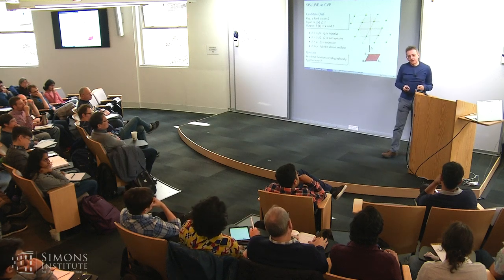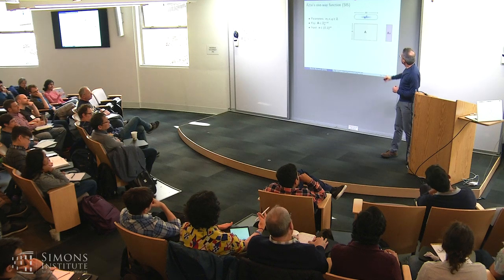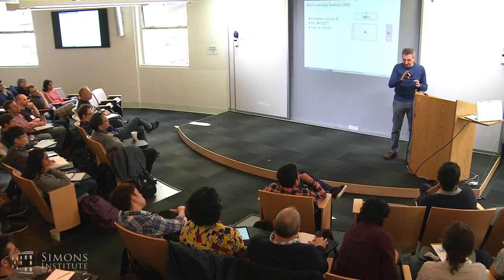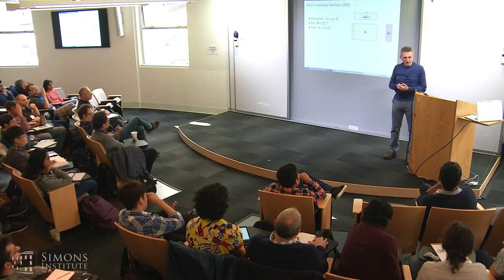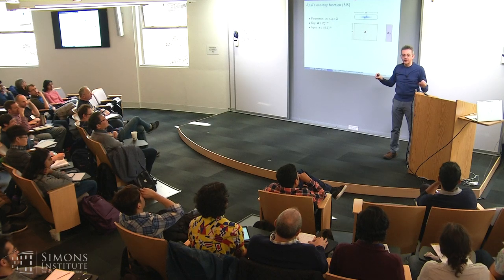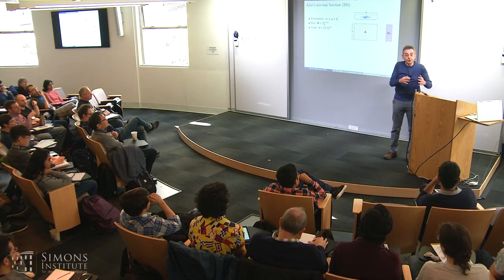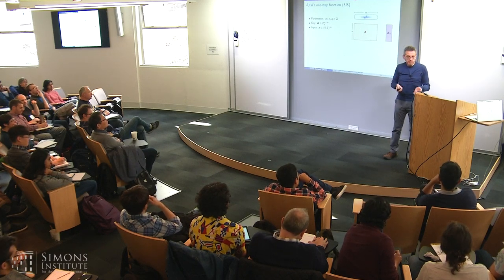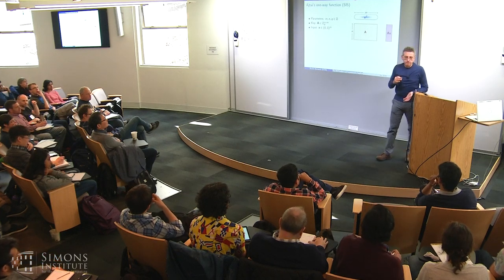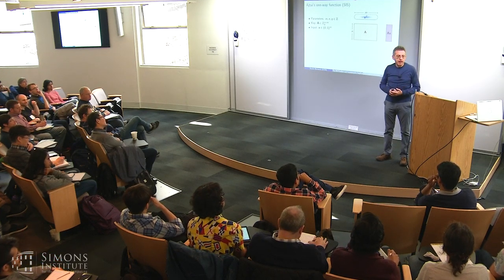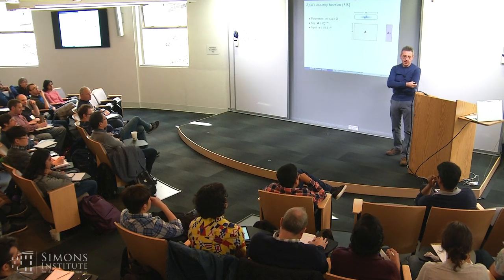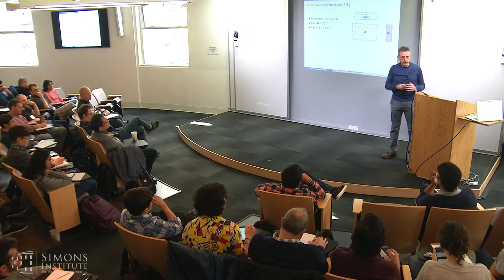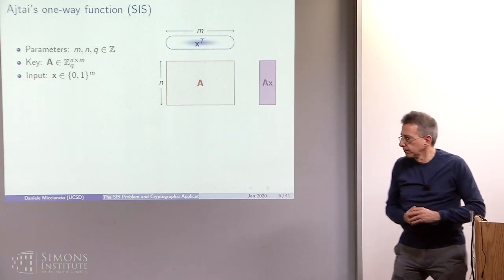It is perhaps a little bit counterintuitive that SIS is usually defined with binary errors, while LWE is defined with errors that are at least square root of n in norm. At first it may seem that LWE is using longer error vectors than SIS, but if you compare it to the determinant of the lattice, it's exactly the opposite situation. In LWE, you need errors to be at least square root of n size for some technical reasons, but you can compensate by setting the dimension and the determinant of the lattice appropriately.